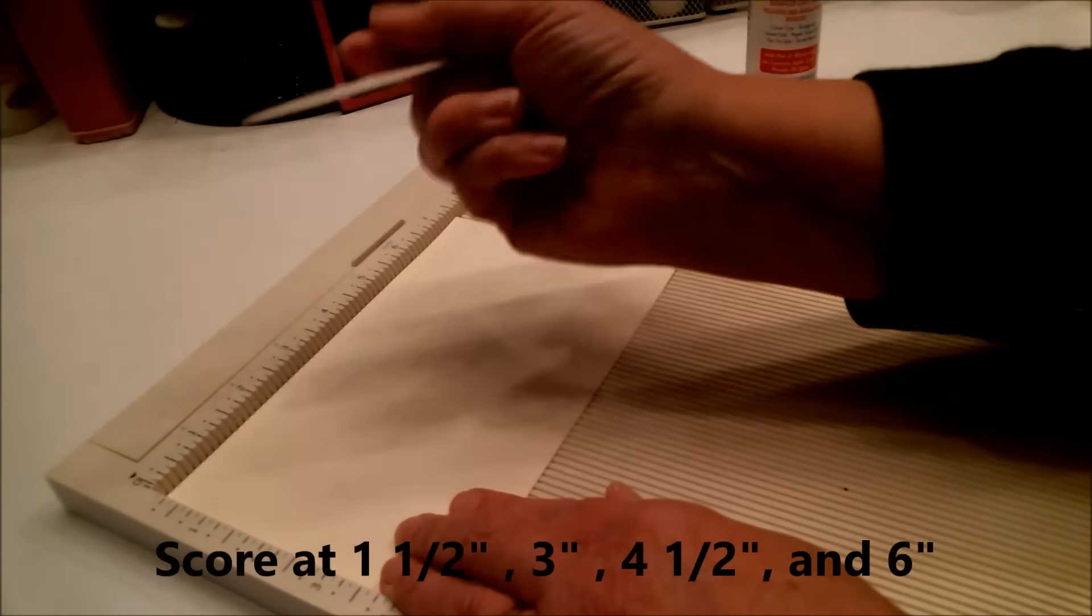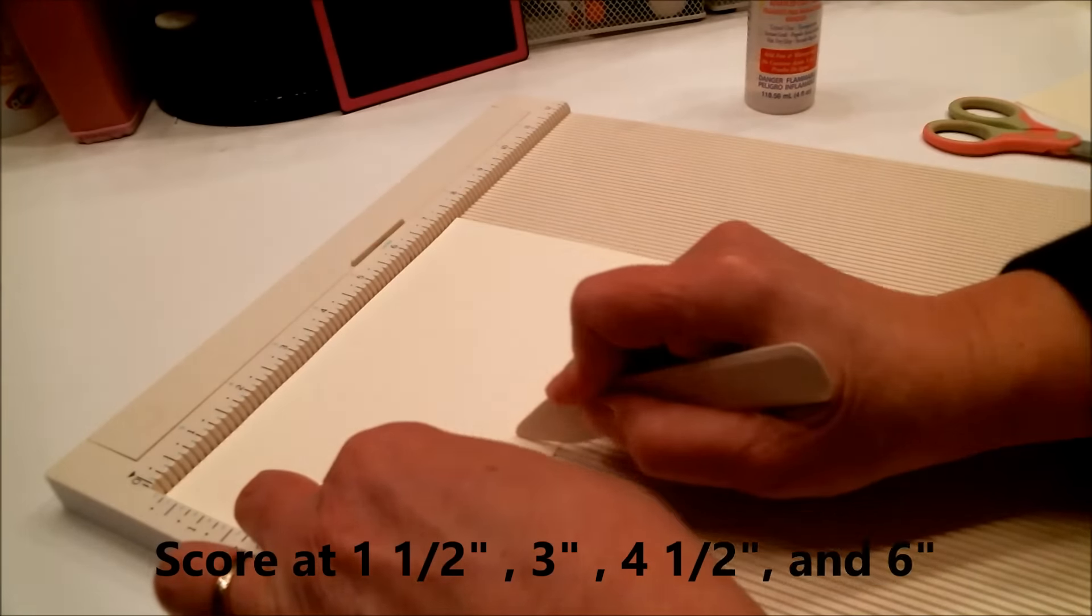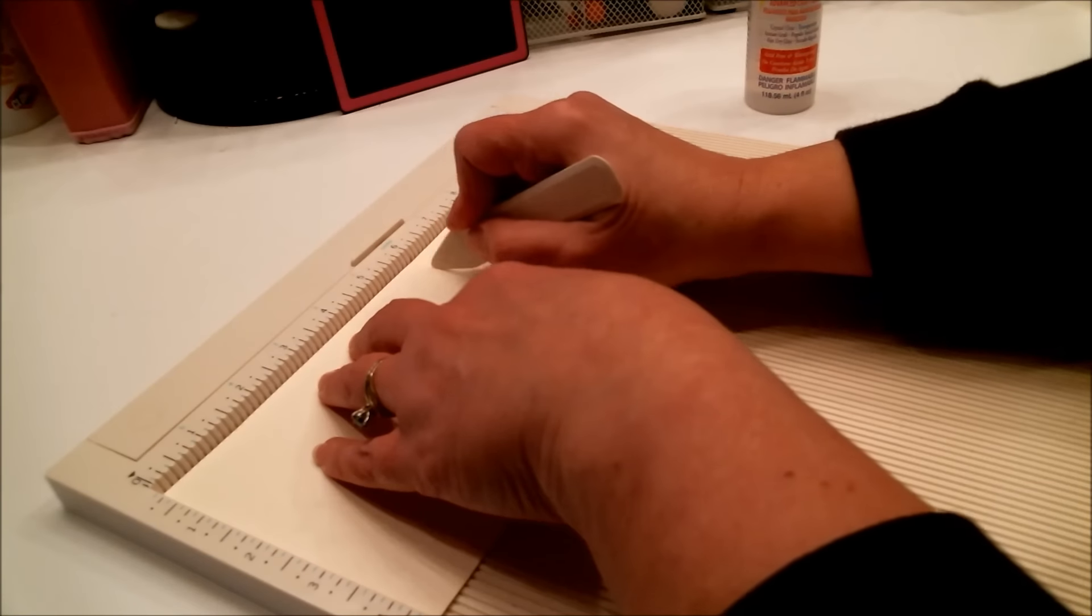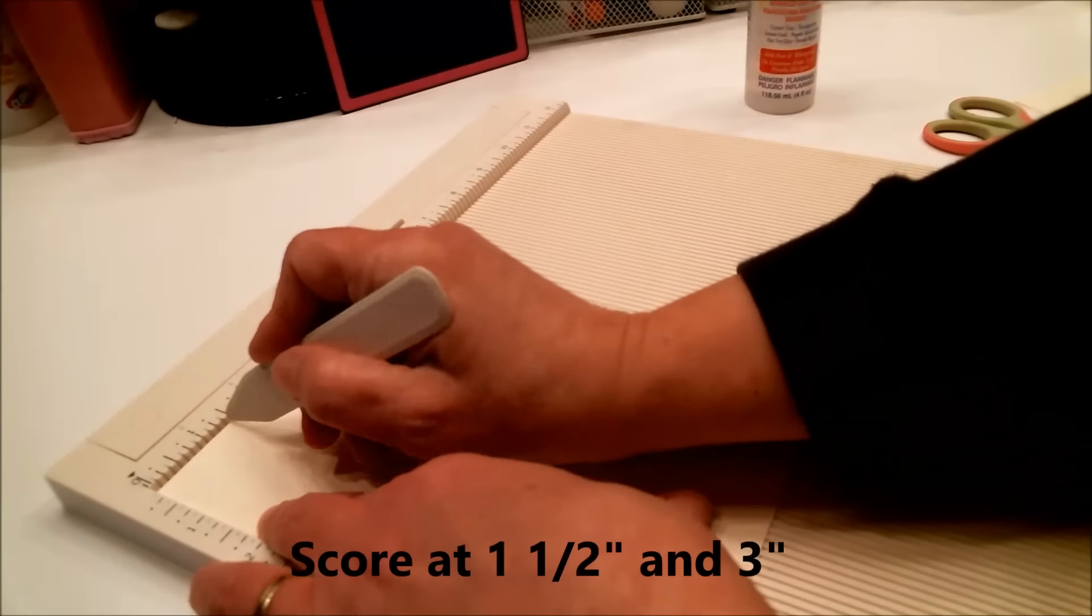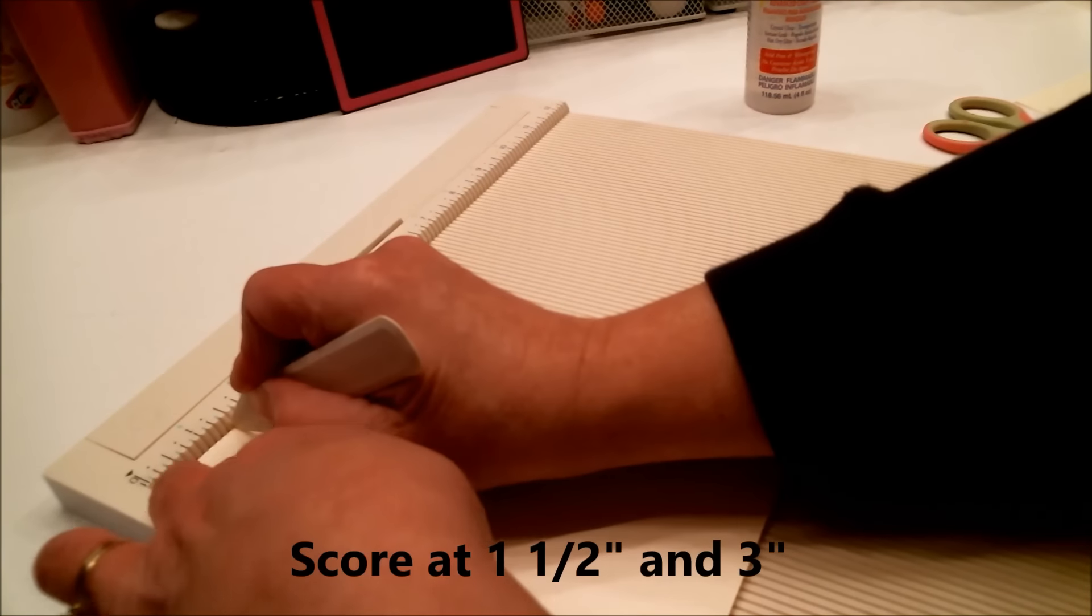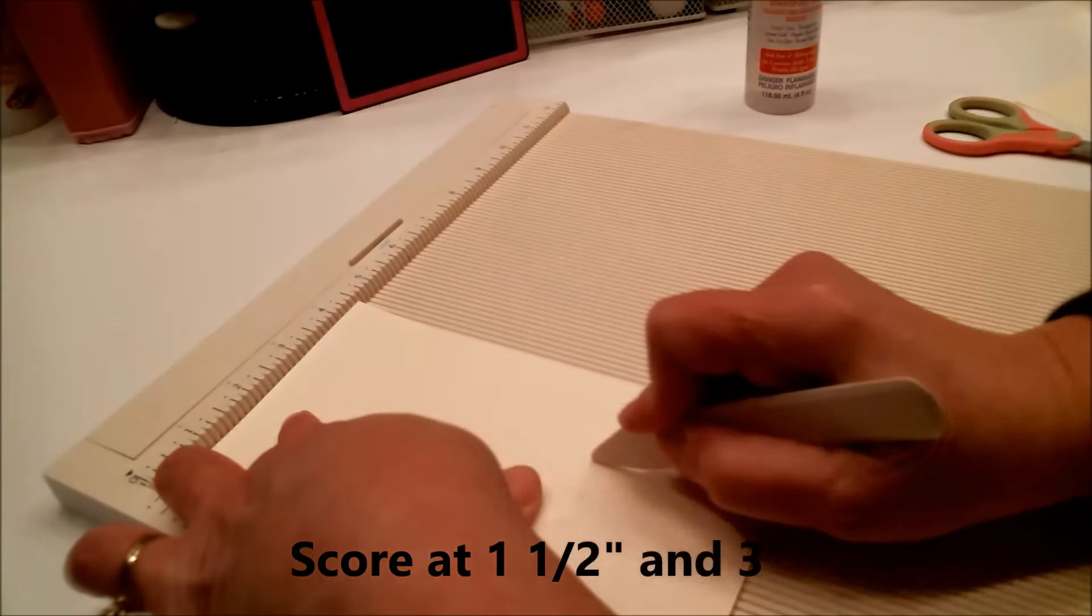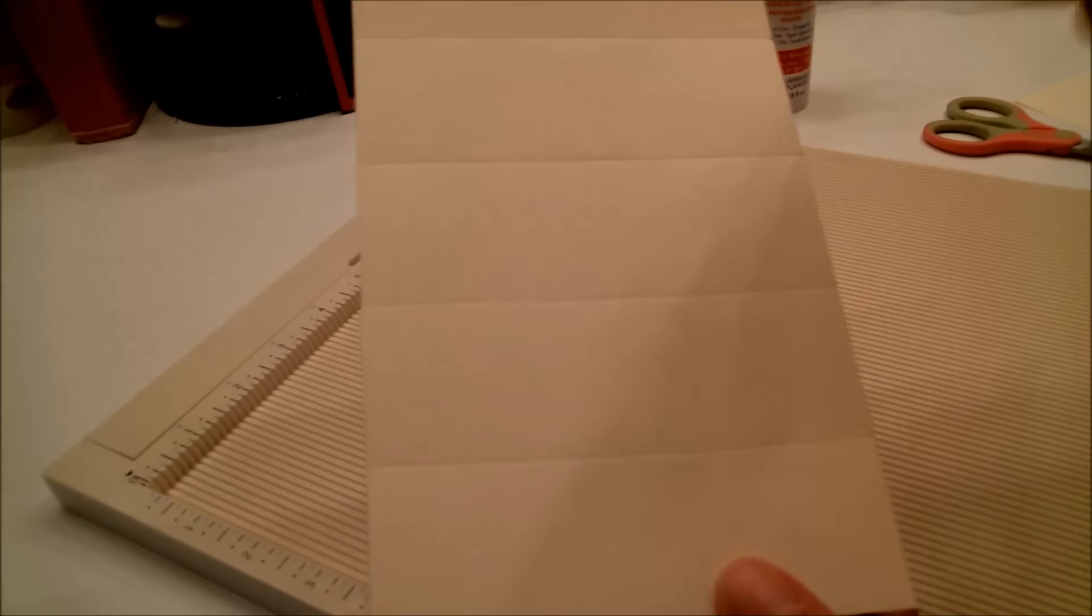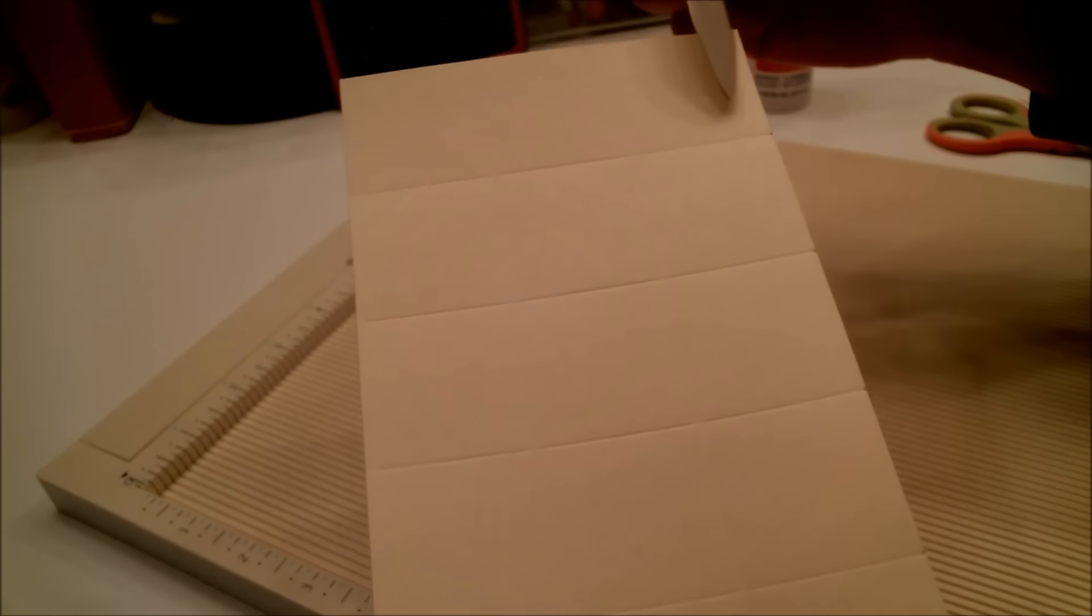You're going to put that on your scoreboard and you're going to score it every inch and a half. So we will score it at one and a half, three, four and a half, and six. Now we're going to turn it and do the exact same thing. We're going to score it at one and a half and three, so every inch and a half both directions. What that does is create a bunch of squares, which happens to be five squares tall and three squares wide, and that's what you're going to need no matter what size you make.